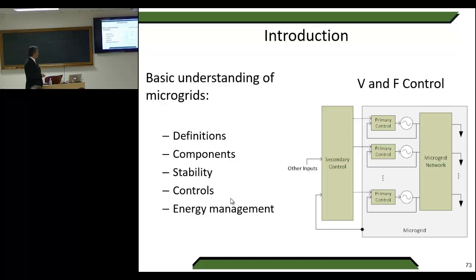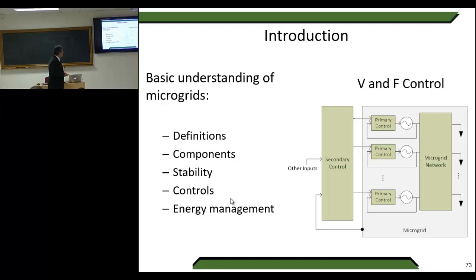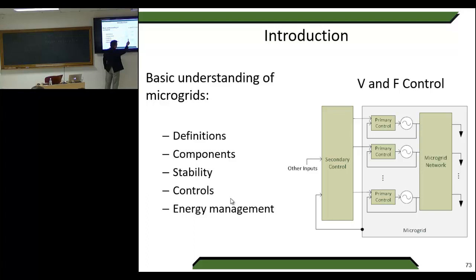Our basic understanding of microgrids covers definitions, components, stability, controls, and energy management. A voltage and frequency control general scheme shows the microgrid network with loads, generators, and how secondary control outputs are used to give control signals to the network — and not only to generators but also to some loads.